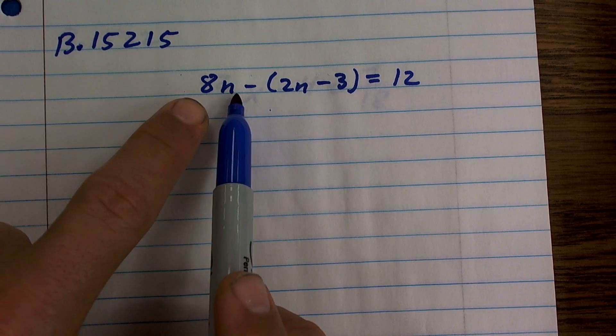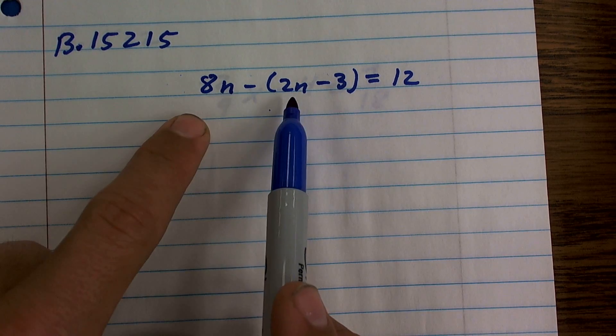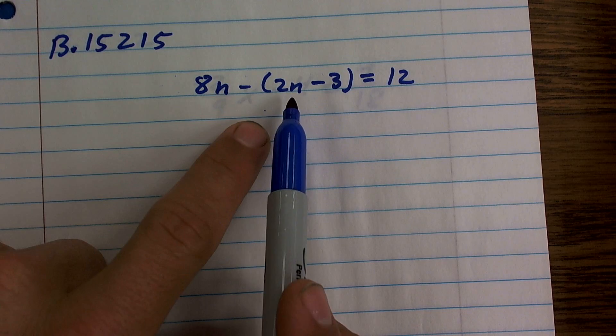So here's a couple mistakes. First of all, let's go through it. A lot of students will say you want to just do 8n minus 2n, but it's not 8n minus 2n.